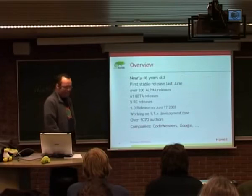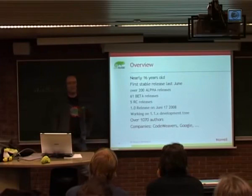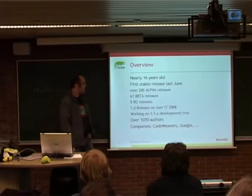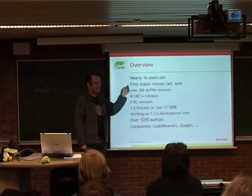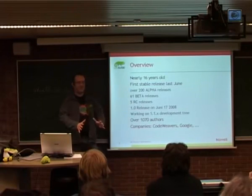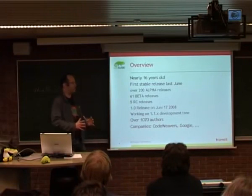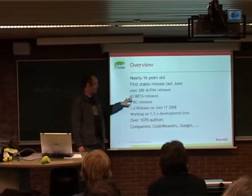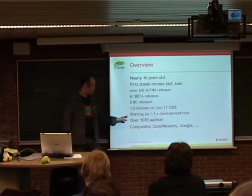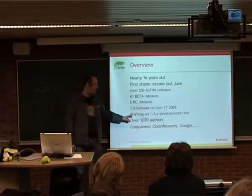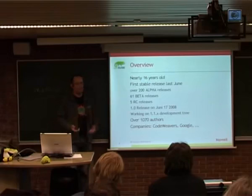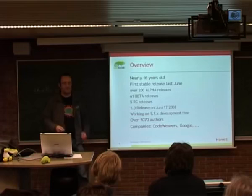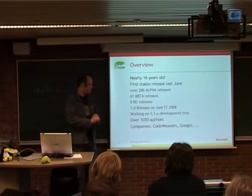To give some overview: Wine is nearly 16 years old, born out of a random idea on a Linux kernel mailing list — why not just run 16-bit Windows programs on Linux? We had our first stable release last June; no one expected we'd finally do it. We set certain criteria and said it's ready for users to test. Before that we had over 200 alpha releases, 61 beta releases, two years of beta phase, five RCs, and on June 17th it was finally released. Development is continuing even faster now; we're working on a 1.1 branch.